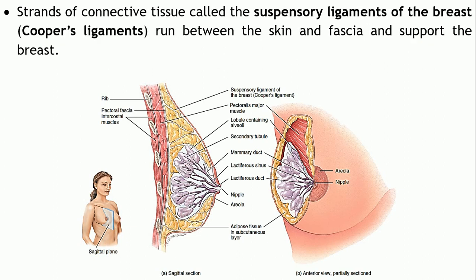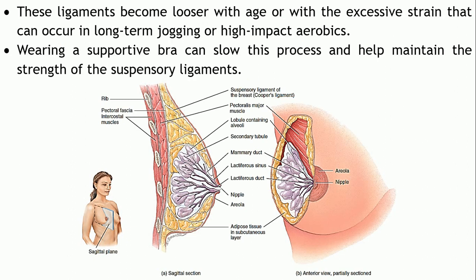Several ligaments support the breast; these are known as the suspensory ligaments of the breast or Cooper's ligaments. They are strands of connective tissue which run between the skin and the fascia. So between the skin and the fascia run a number of connective tissue strands, whose main function is supporting the breast.